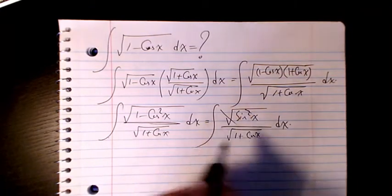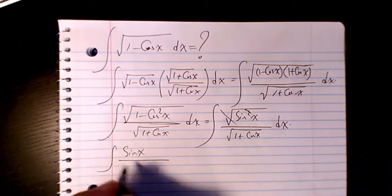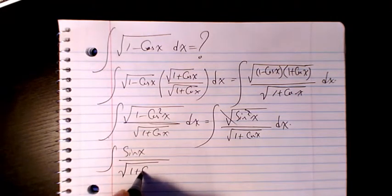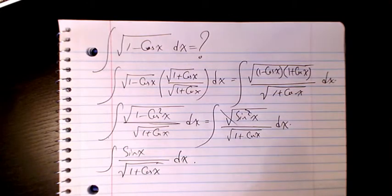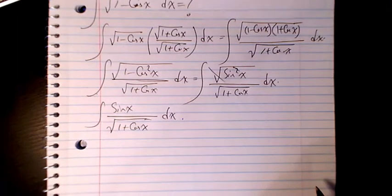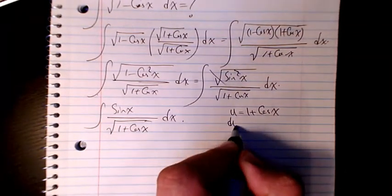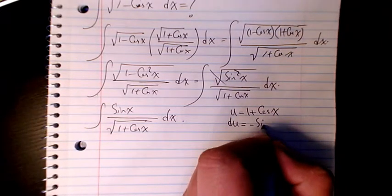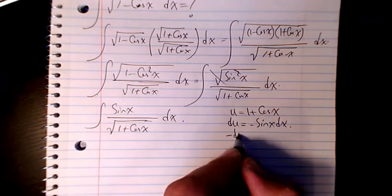The square roots cancel and we are left with sine x divided by square root of one plus cosine x dx. Then we use integration by substitution: let u equal one plus cosine x, so du equals negative sine x dx, meaning sine x dx equals negative du.